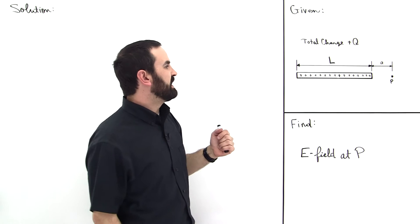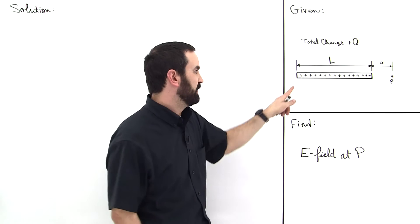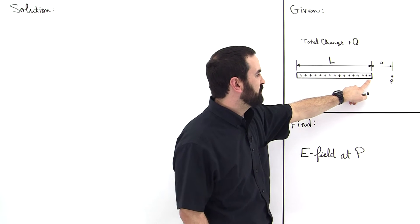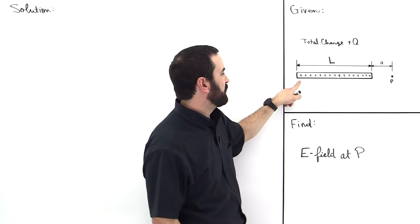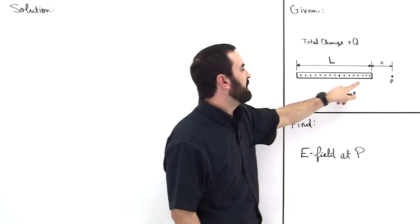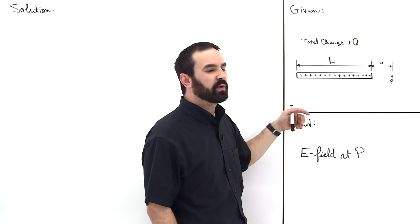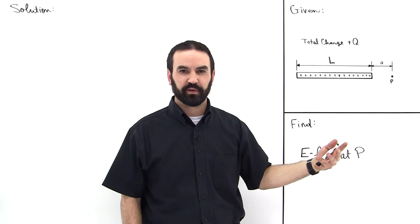The first thing we note is that we're going to have to sum up the different contributions from all the little independent charges. For example, this amount of charge right here is much closer to point P than this amount of charge way over here. So this amount of charge is going to contribute more to the electric field than the charge way over here. We're going to have to do a sum and sum up all the different effects to give the total effect.